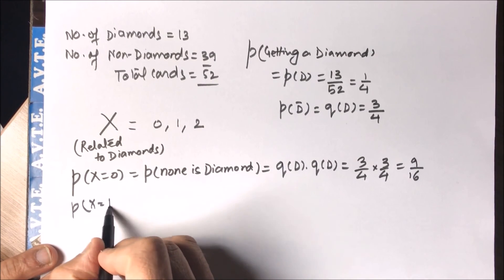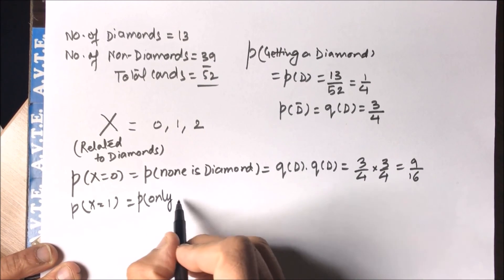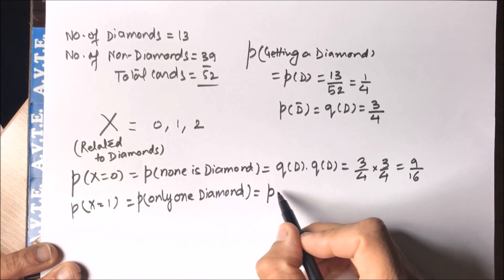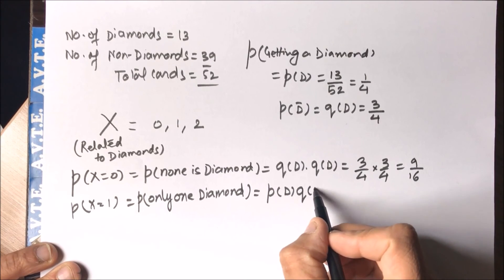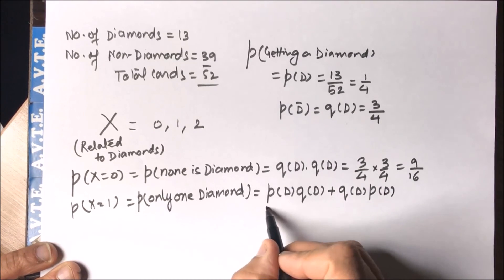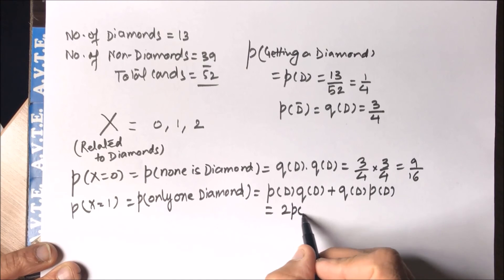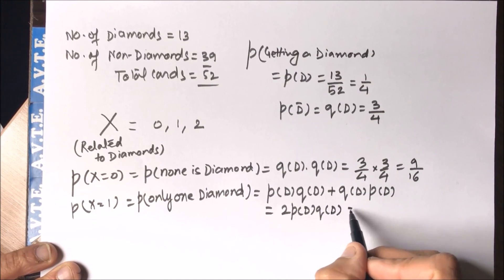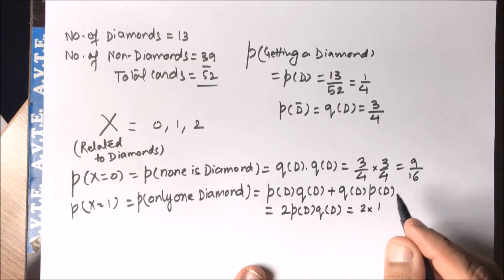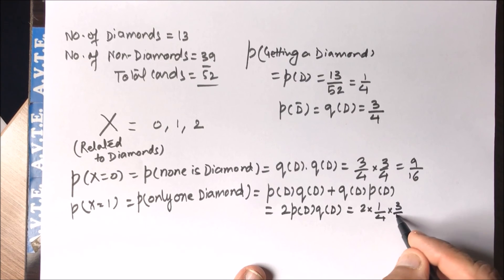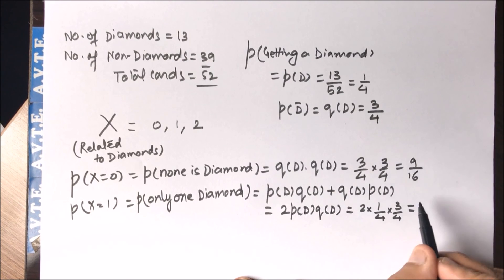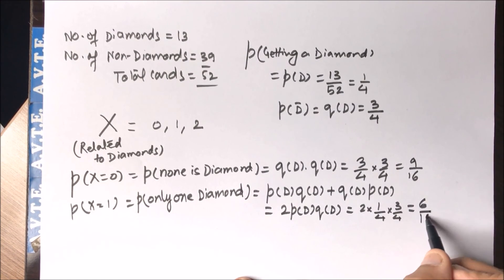For X = 1, only one diamond. There are two cases: the first card is a diamond and the second is not, or the first is not and the second is. Since the probability is equally distributed in both cases, we multiply by 2. So P(X=1) = 2 × (1/4) × (3/4) = 6/16.